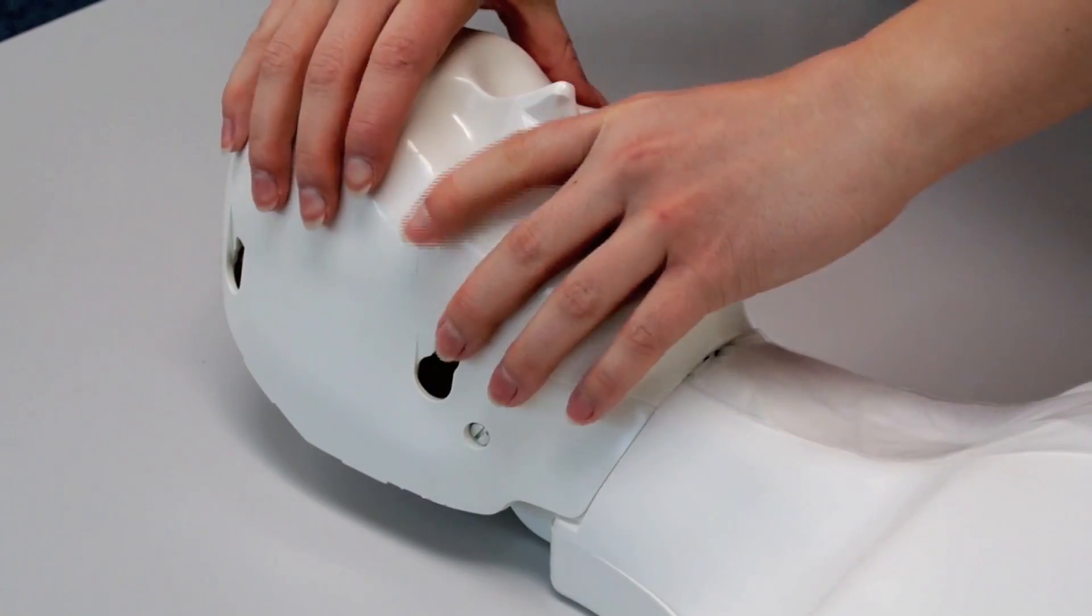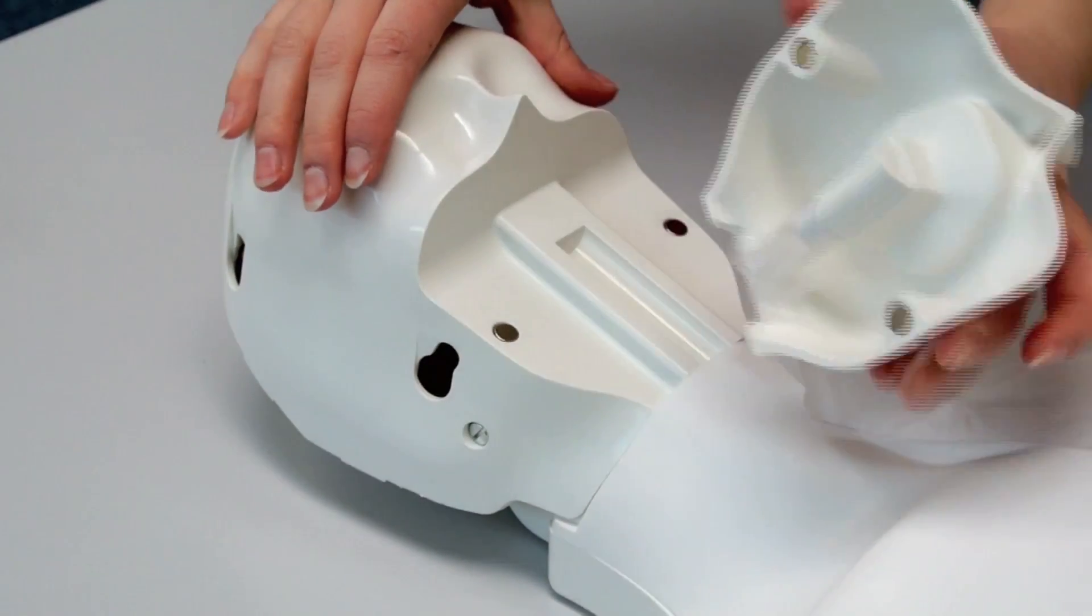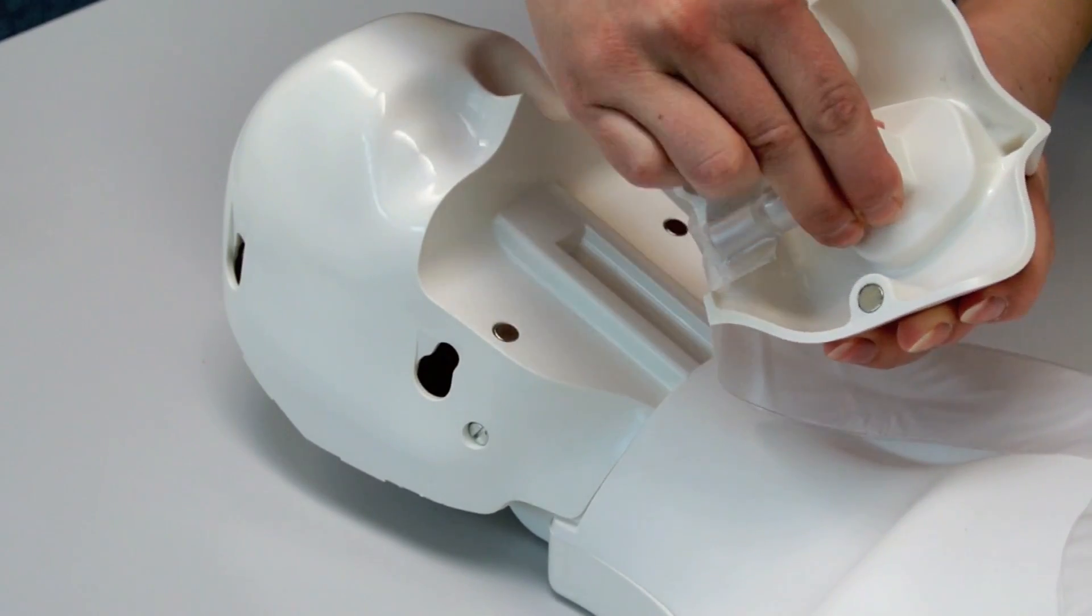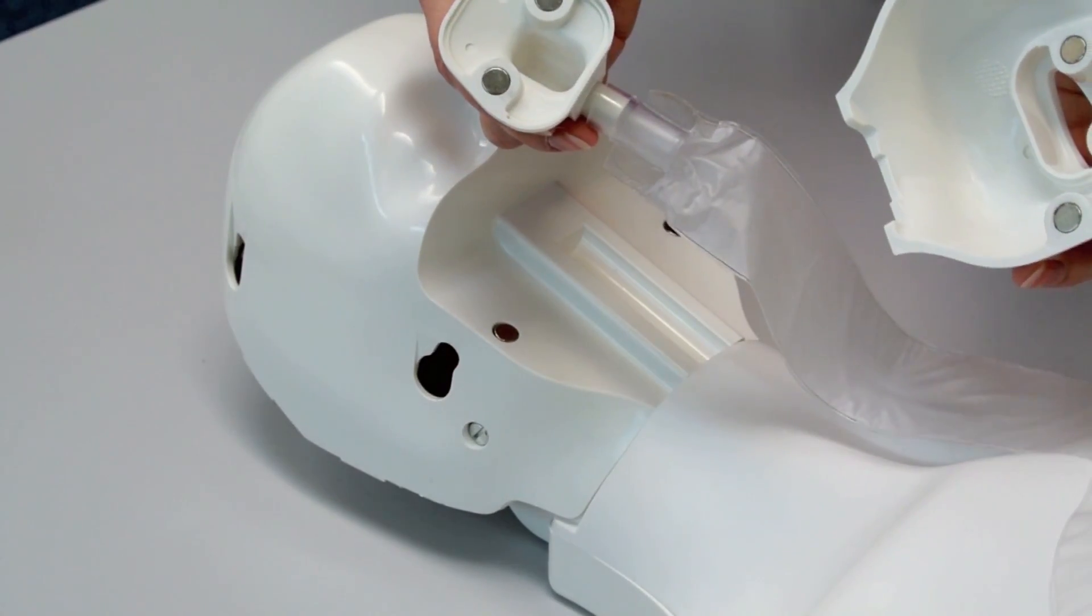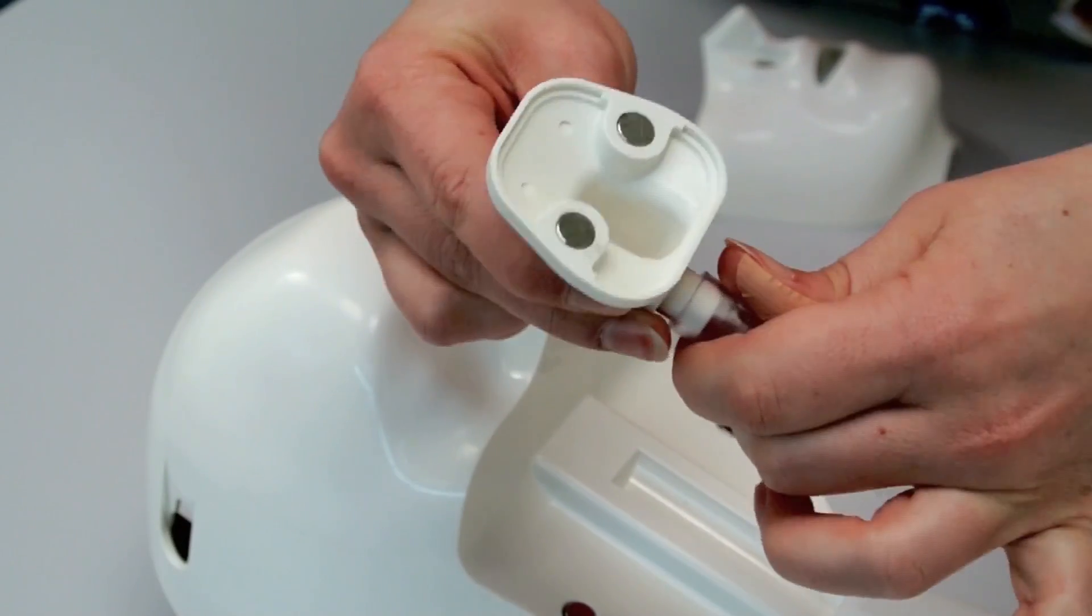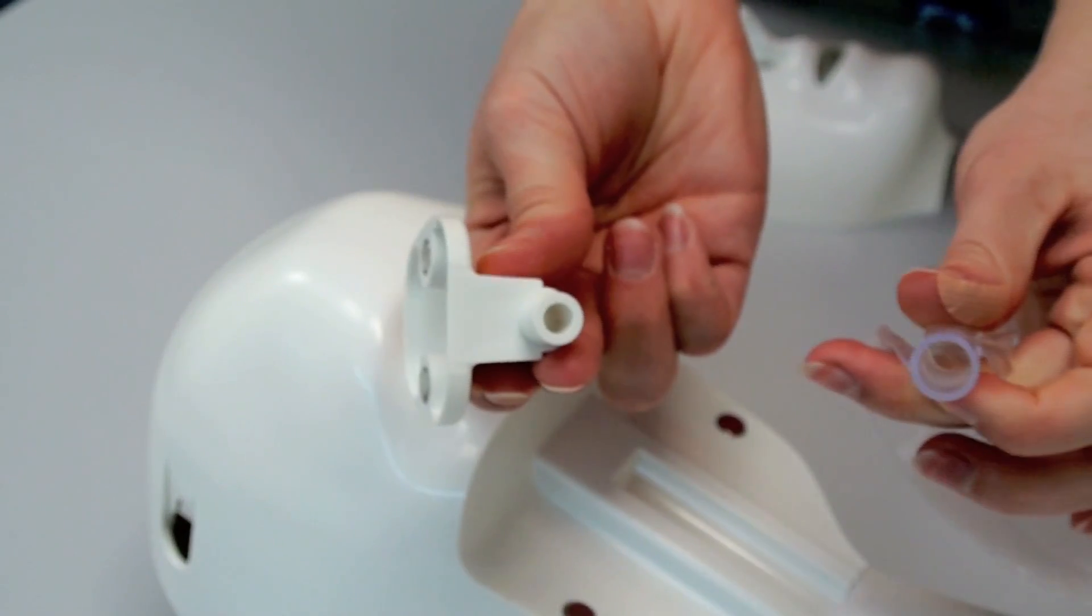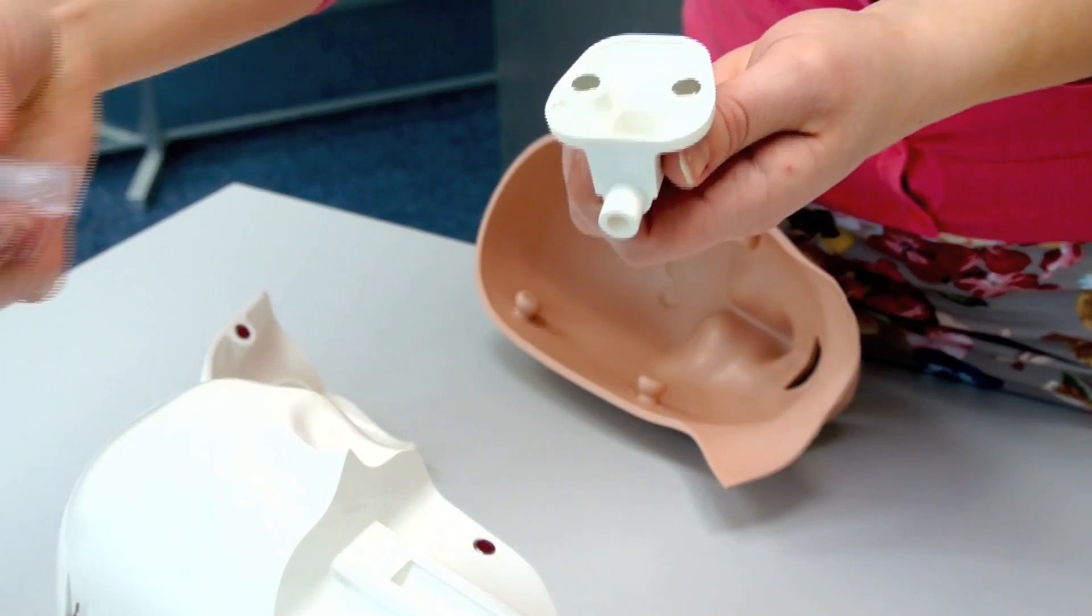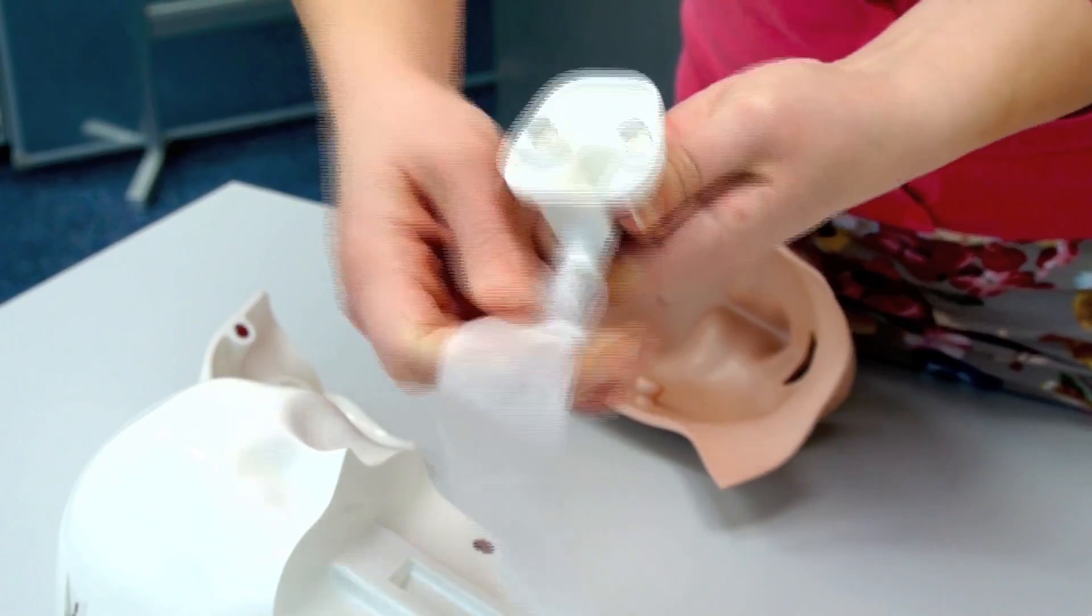To detach the lung bag from the lung bag socket, you need to remove the jaw insert. Replace the used lung bag with a new one, and reattach the lung bag socket to the jaw insert.